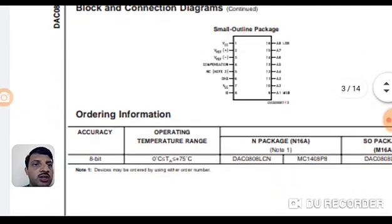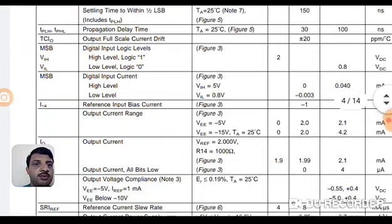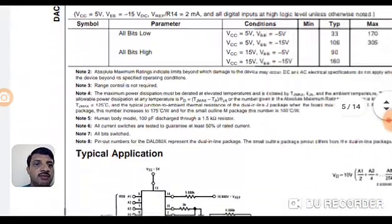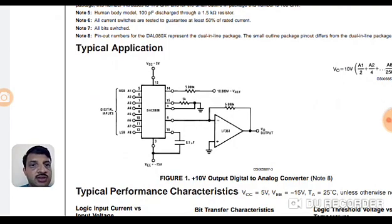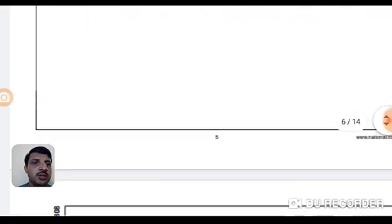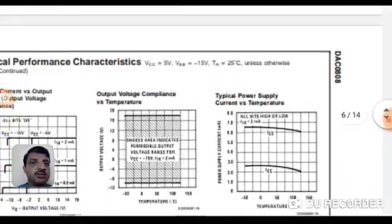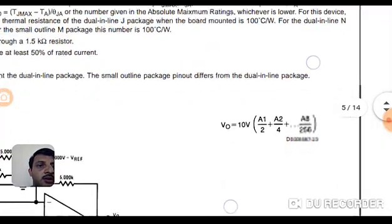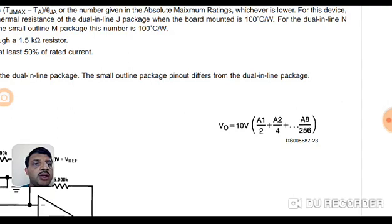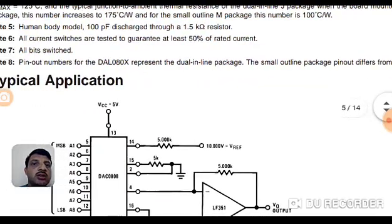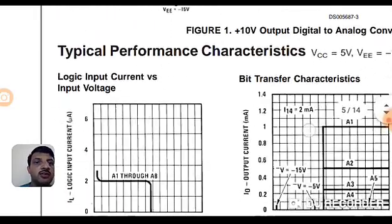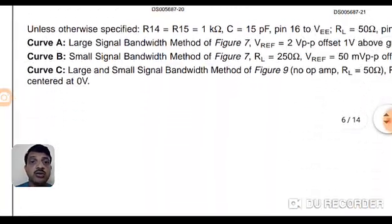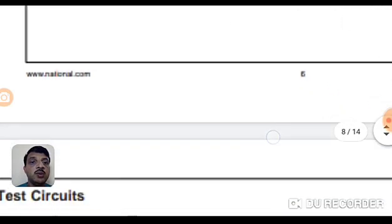Going further in the data sheet, you can find pin descriptions, typical ratings, and the application circuit already discussed, which can be implemented for any DAC application. Coming to the current calculation, V0 is given by: 10V times (A1/2 + A2/4 + ... + A8/256), where A1 through A8 are the digital input bits. This is the standard calculation applicable to the basic R2R ladder DAC formula.